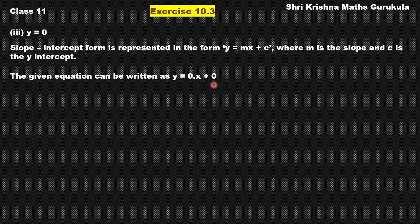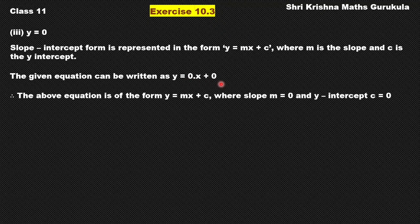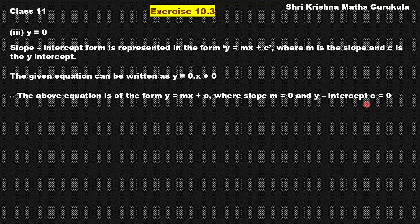We wrote it in this form because the question specifies to reduce it to slope-intercept form. So we have written it as y equals 0 times x plus 0, where slope is 0 and y-intercept is also 0. We have just reduced each equation to slope-intercept form and compared with the standard form to identify the slope and y-intercept. We just need to remember all the standard forms of the equation. If you still have any doubt, please do mention it in the comment section.